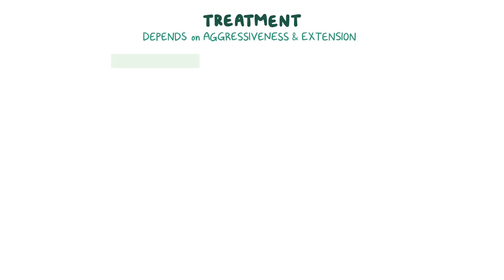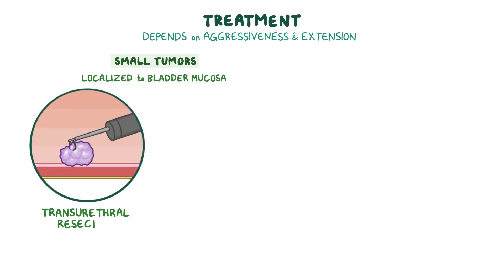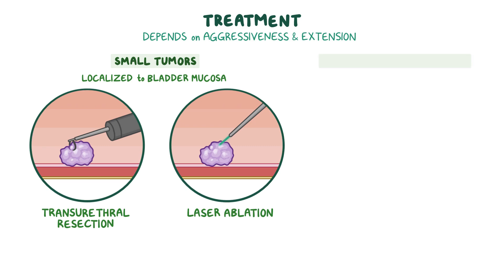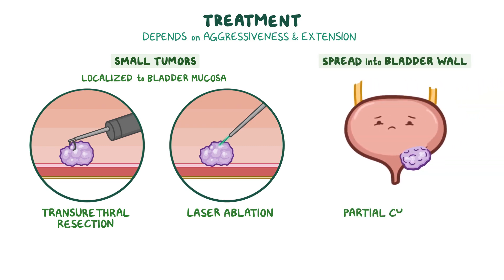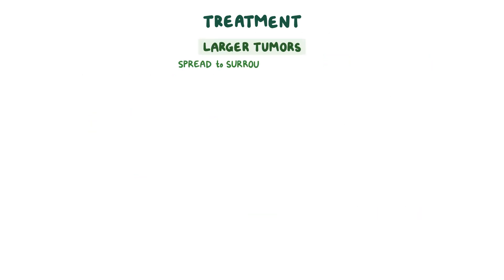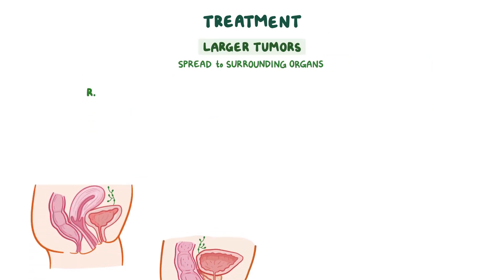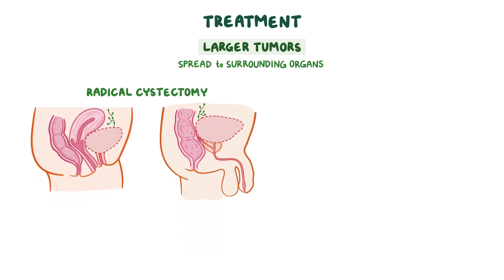Treatment for bladder tumors depends on their aggressiveness and extension. Small tumors localized to the bladder mucosa can be treated with transurethral resection or laser ablation. Tumors that spread deeper into a single area of the bladder wall are treated with a partial cystectomy, removing the affected part of the bladder. For larger tumors that have spread to surrounding organs, the treatment of choice is a radical cystectomy — removal of the entire bladder, nearby lymph nodes, and surrounding organs including the uterus or prostate.